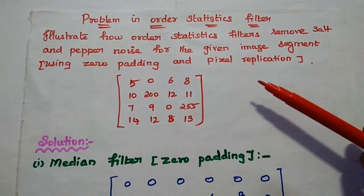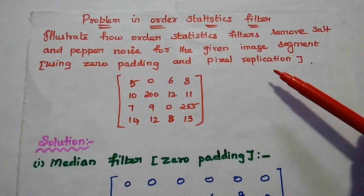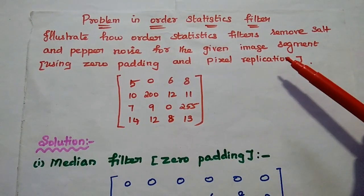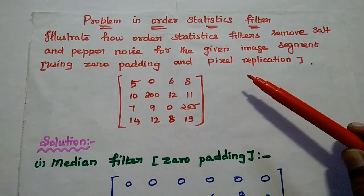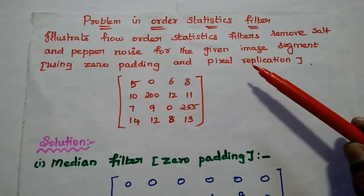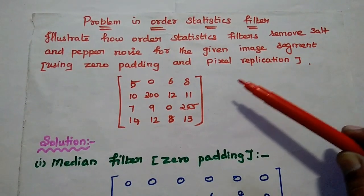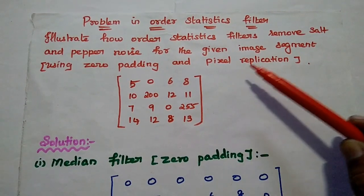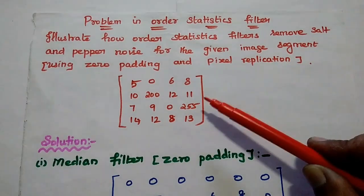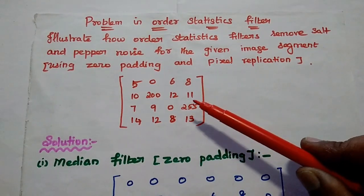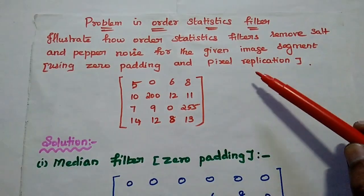Dear students, now we are going to solve one important problem in order statistics filters. Illustrate how order statistics filters remove salt and pepper noise for the given image segment using zero padding and pixel replication.